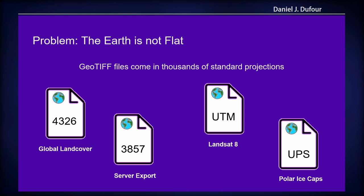The first problem that we've solved recently is: the earth is not flat. I really wish it was. GeoTIFF files can come in thousands of different standard projections, and that's really good because it preserves the quality of the data. For example, you could have a land cover dataset for the whole world, which would be in EPSG:4326, and then you might have polar ice caps in UPS or Landsat in UTM. Really thousands of these.